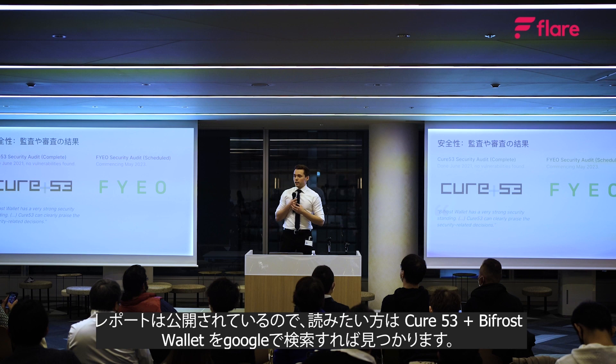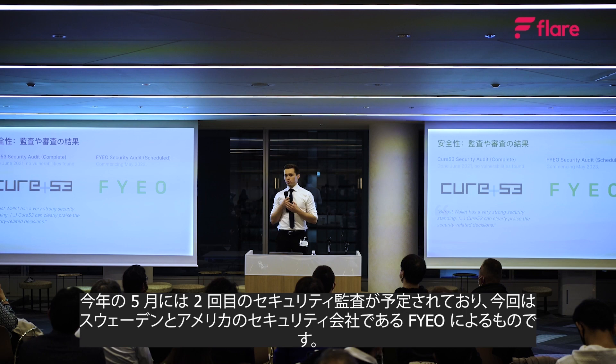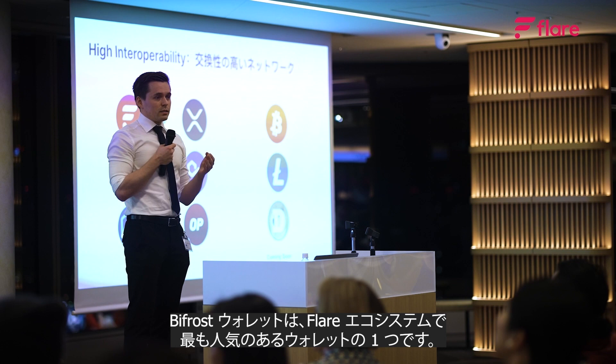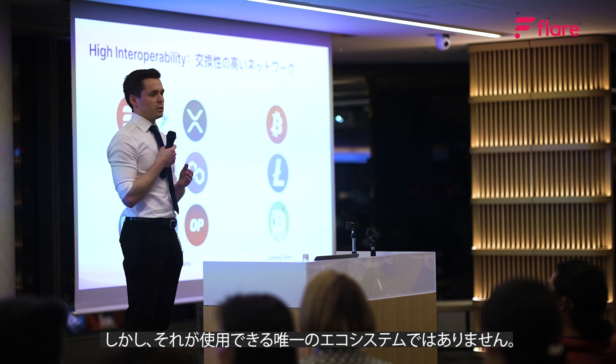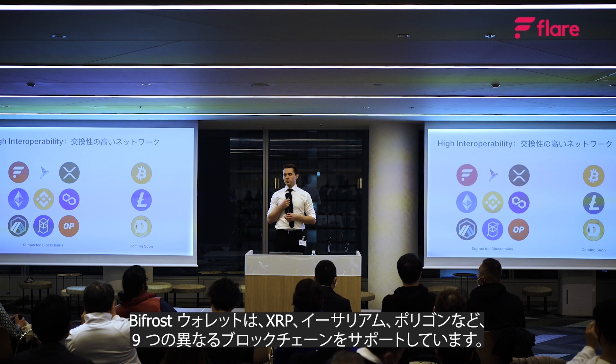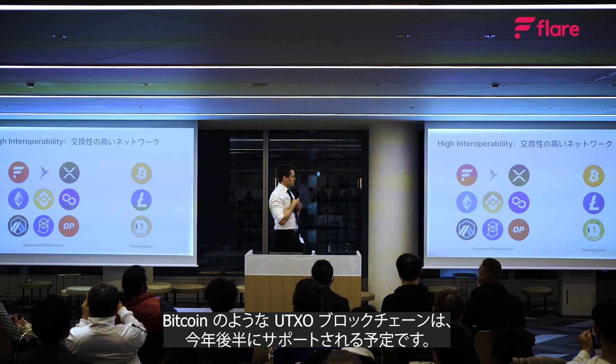A second security audit is scheduled for this year in May, this time with the Swedish and American security firm FAIO. Bifrost Wallet is one of the most popular wallets for the Flare ecosystem, but it supports nine different blockchains today, including Ethereum, Polygon, and XRP. UTXO blockchains such as Bitcoin will also be available later this year.